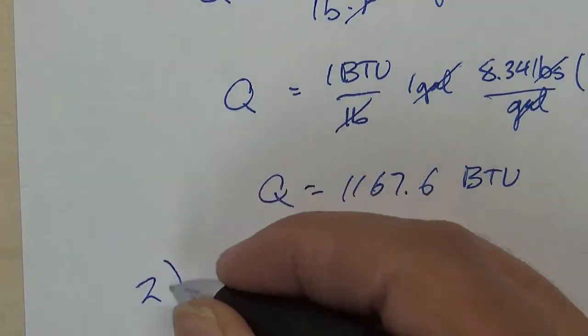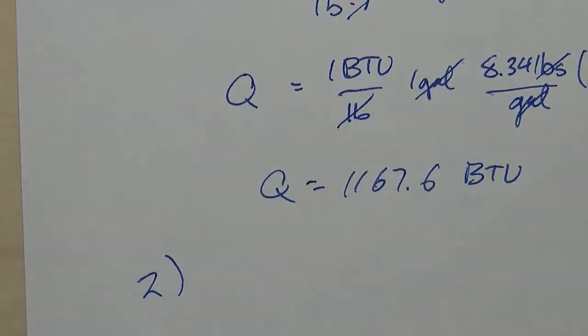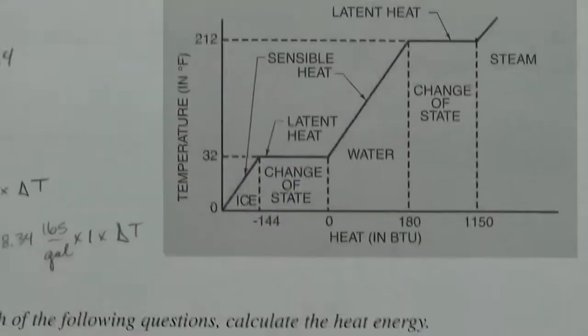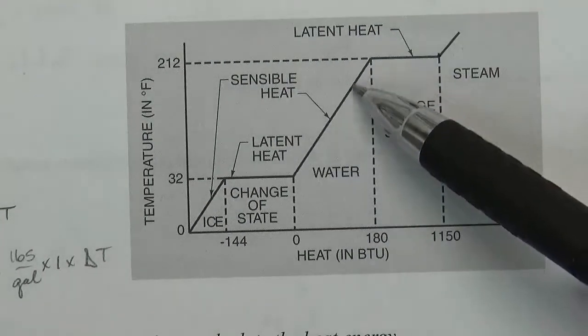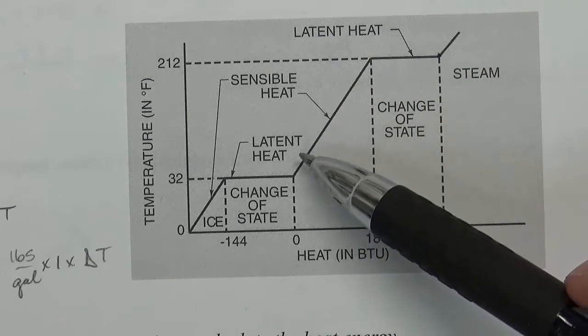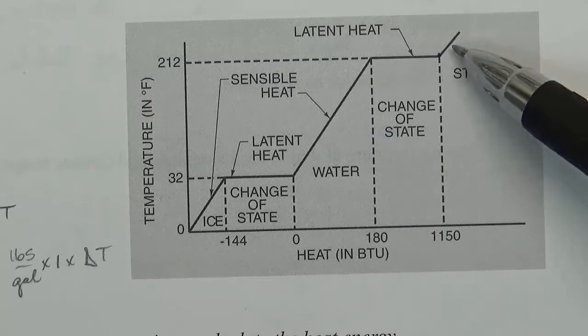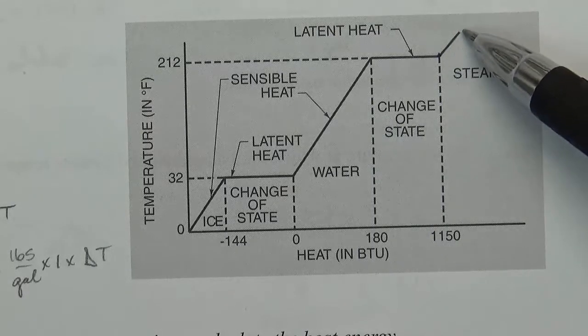Now for number two, it says what is the amount of heat energy in BTU that must be added to a gallon of water at 212 to convert it to steam at the same temperature? So when we're on this part of the curve, we use our heat formula, Q equals C M delta T. Same with up here, but this would be for steam, so C would be different.